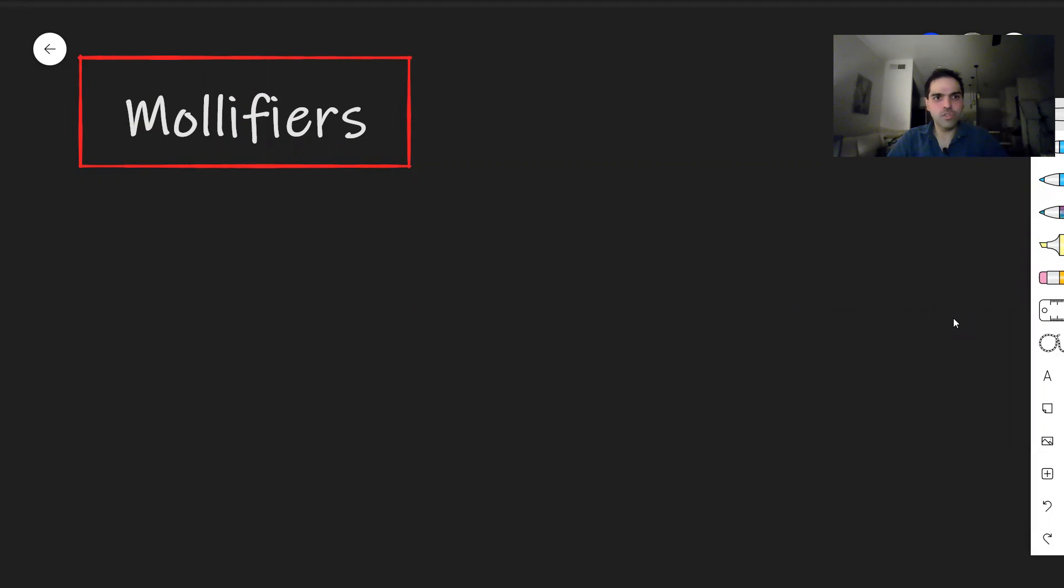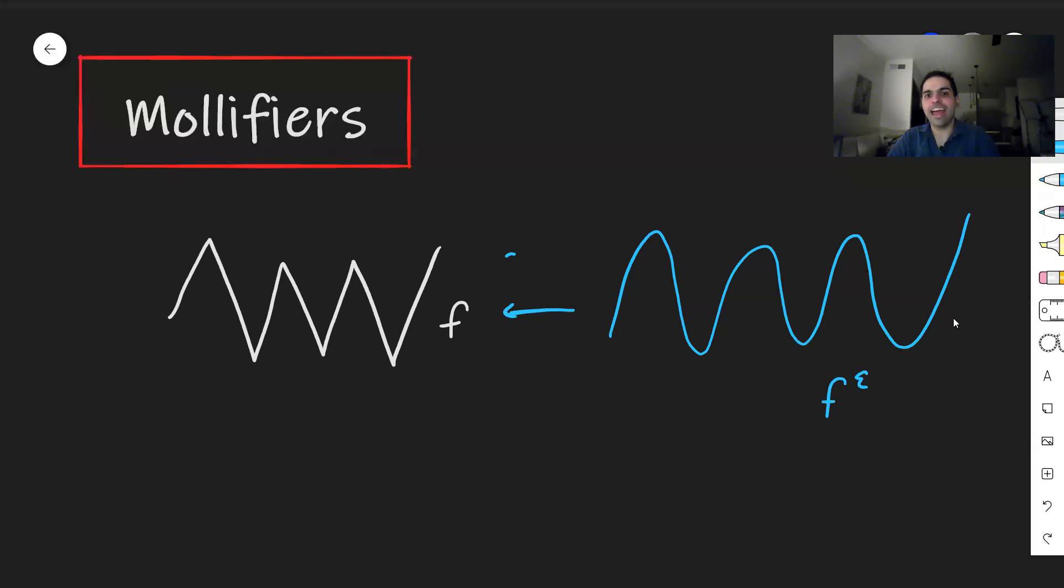For instance, suppose you have a function f like that with lots of kinks. The main idea is we would like to approximate f with a smooth function called f epsilon, maybe like that, in such a way that as epsilon goes to zero, f epsilon goes to f. So in other words, it should be a smooth approximation.